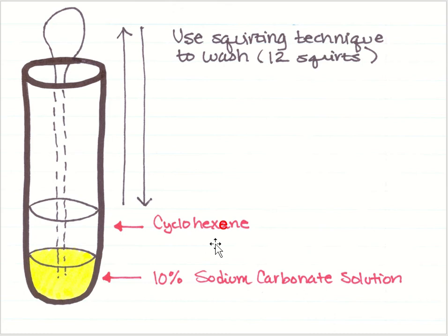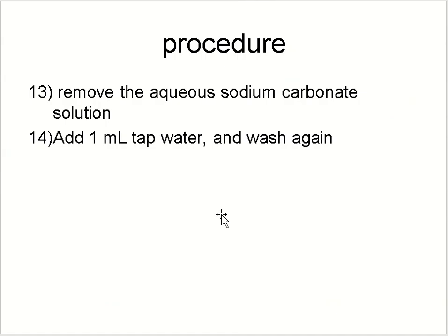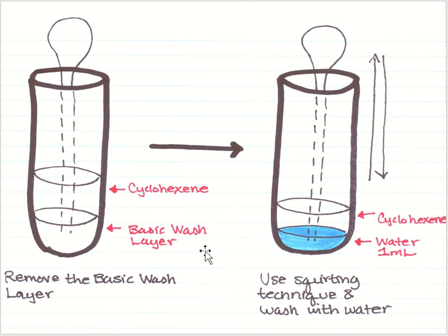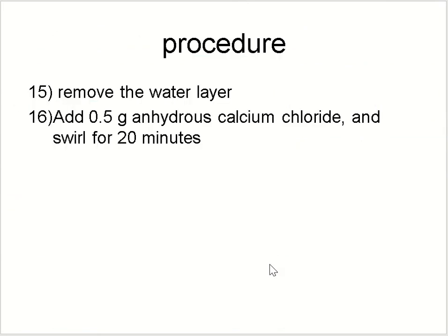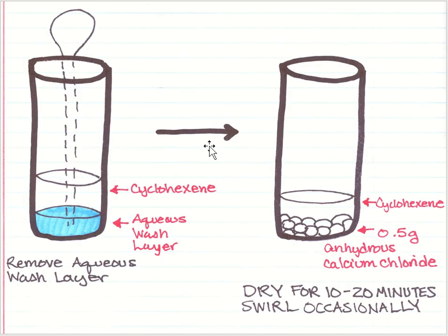There may still be some remaining water, so we need to remove it. Add 0.5 grams of anhydrous calcium chloride and swirl it for about 20 minutes. All the water will be absorbed by the calcium chloride. Then remove the aqueous layer again. The cyclohexene will be more pure than before.